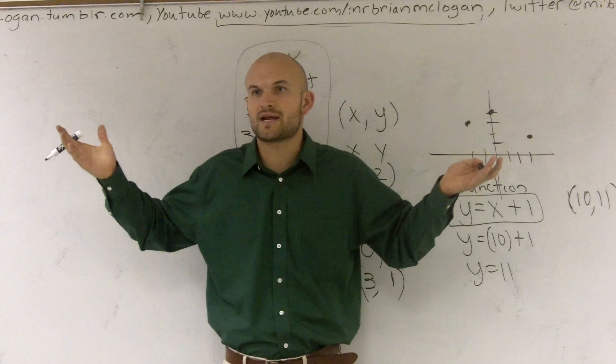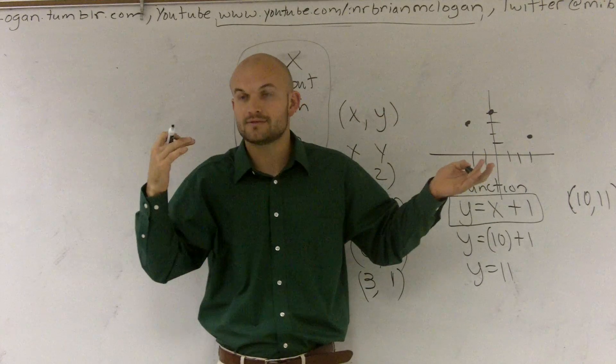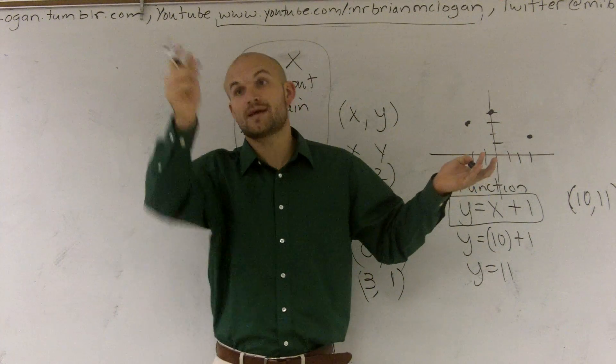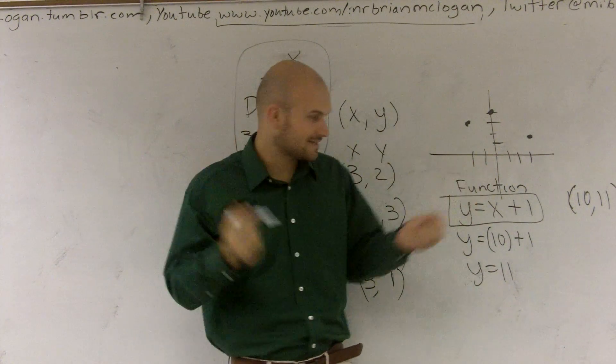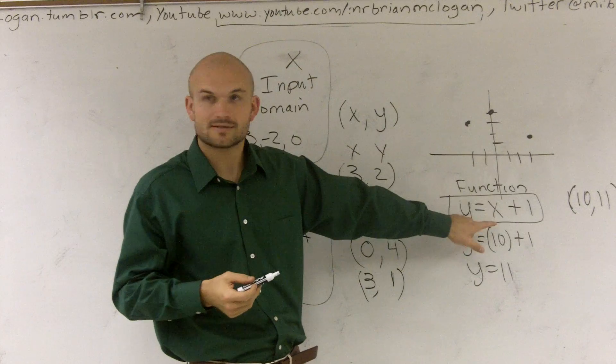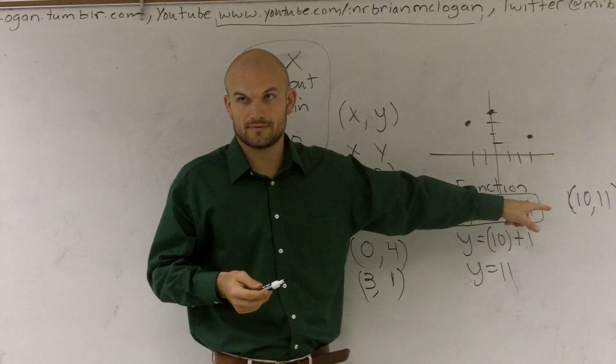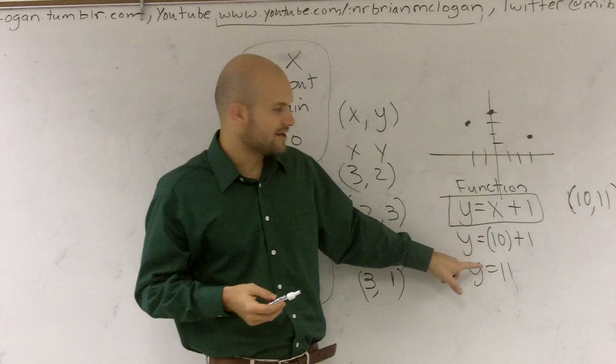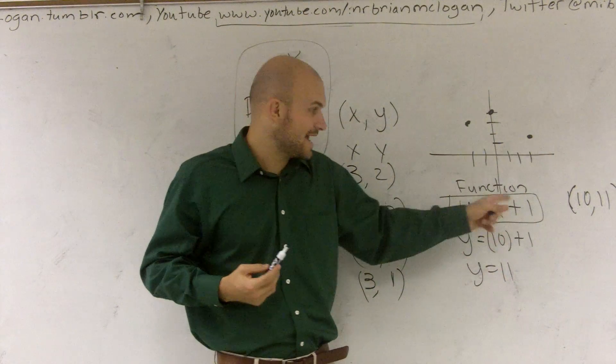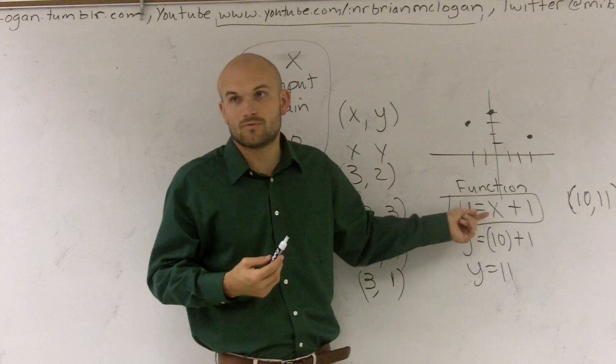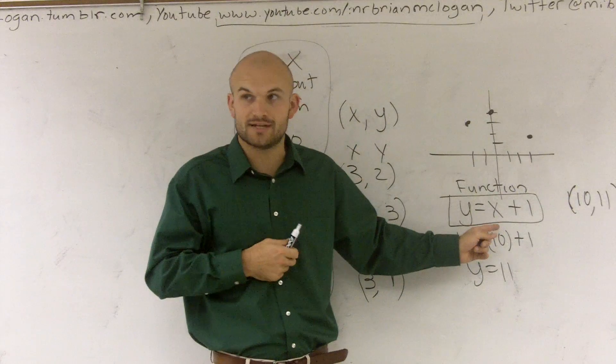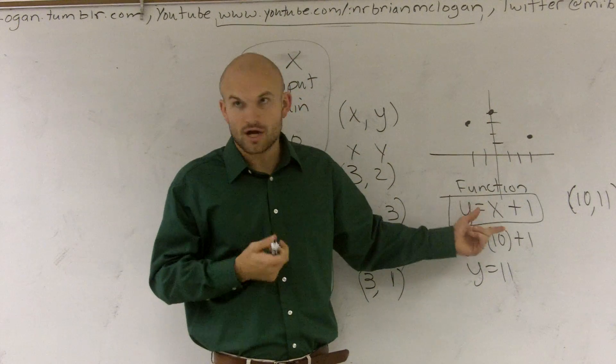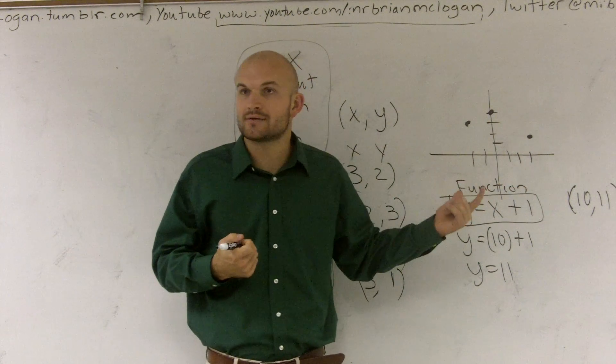The reason why it's a function is because every time I put in a number, it uniquely gives me an output value. Think of any number in the world. Somebody want to raise their hand, give me a number, random number. Eight. So if you're putting eight for this, eight plus one is what? Like nine. So therefore, y would equal nine. Now, is there any other way that y could equal something different if you put eight in for x? No, it's always going to be eight plus one always equal nine.